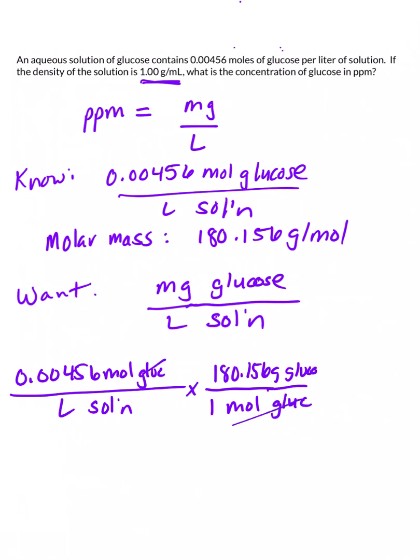Those units cancel. So now we have grams of glucose per liter of solution, but what we want are milligrams of glucose per liter of solution. So we can convert grams into milligrams, because we have 1 gram of glucose, there's 1,000 milligrams.